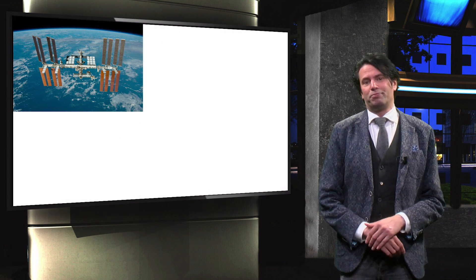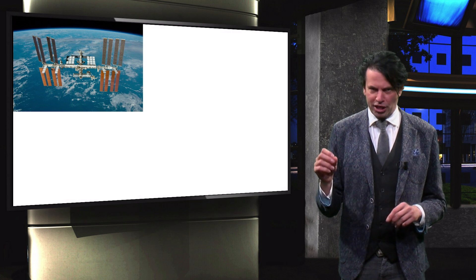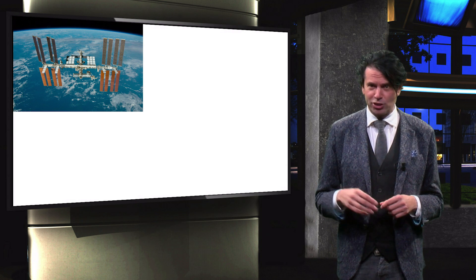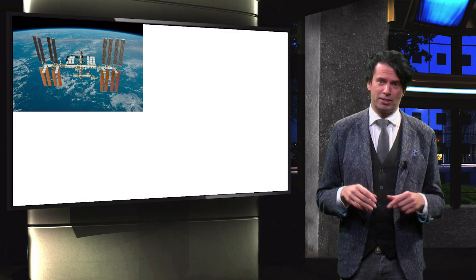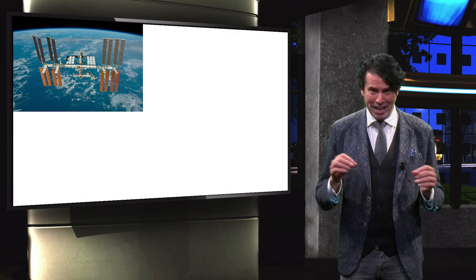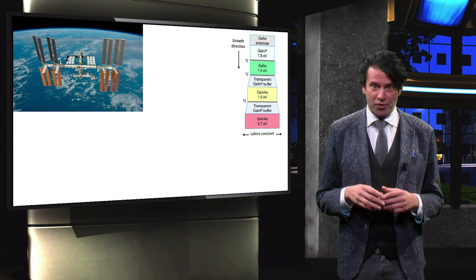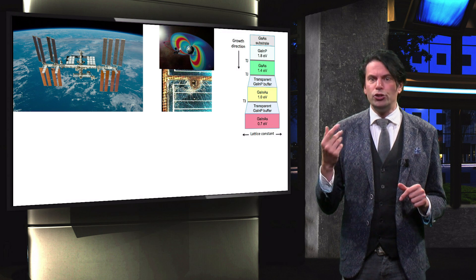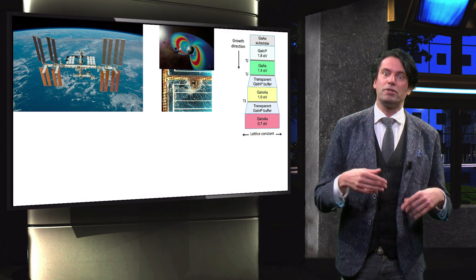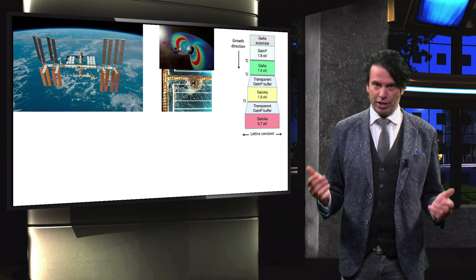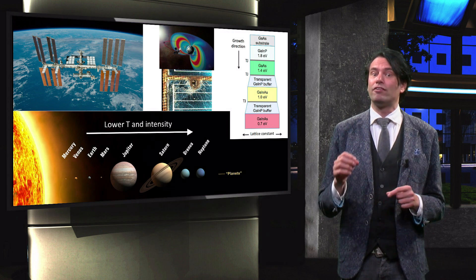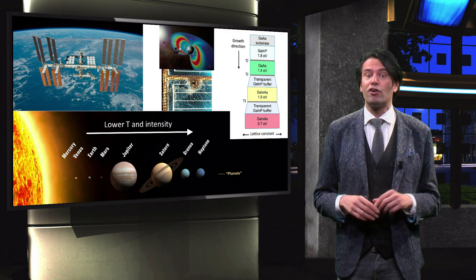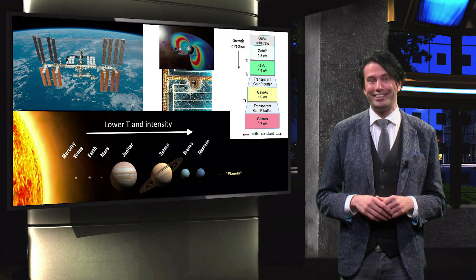In summary, we started this video with a short overview of solar cells used in space. You then learned about some important design considerations for PV technology in space. The weight of the germanium substrate leads to innovative designs with temporary substrates. The high energy radiation and space debris demand the use of radiation-resistant materials and special encapsulation. Finally, the temperature and intensity can vary strongly on outer space missions, which is especially challenging for multi-junction devices.